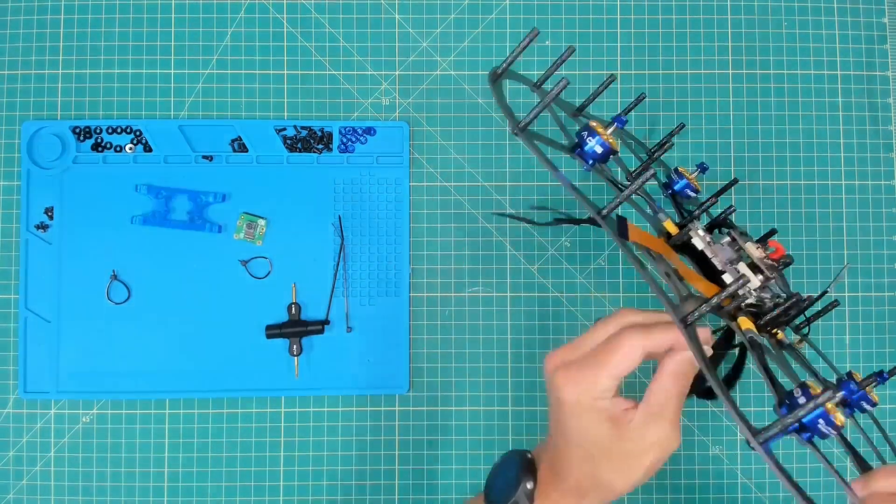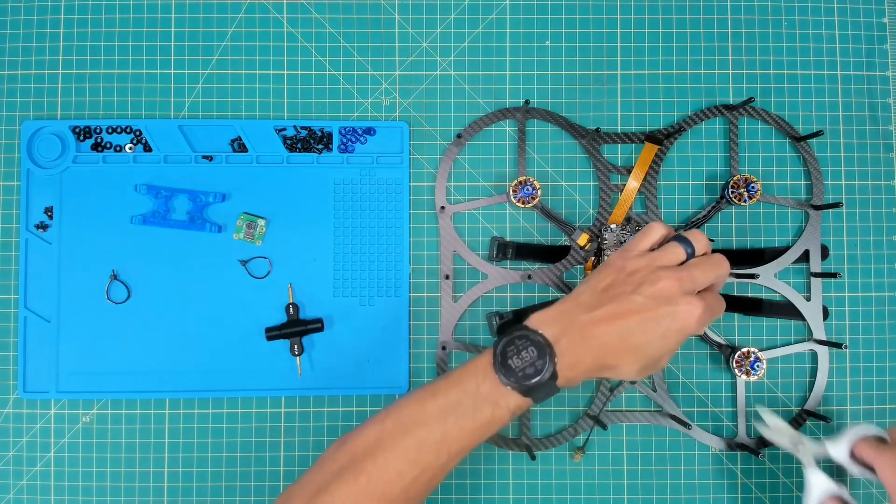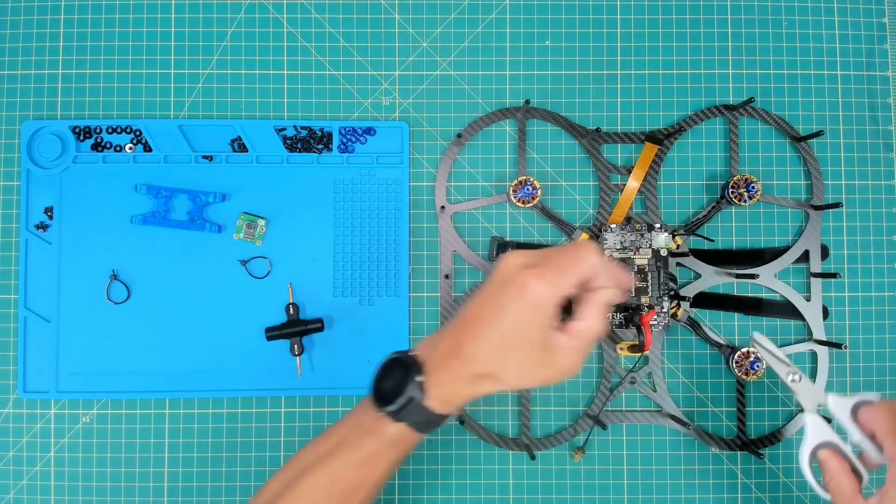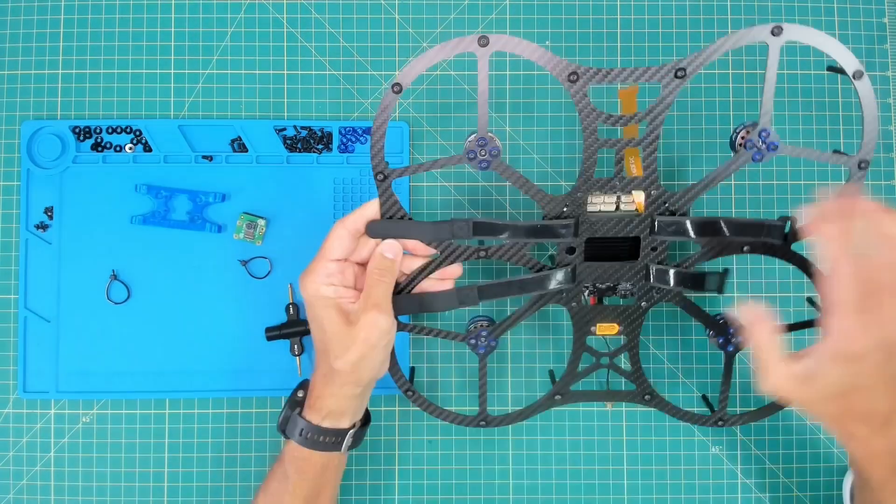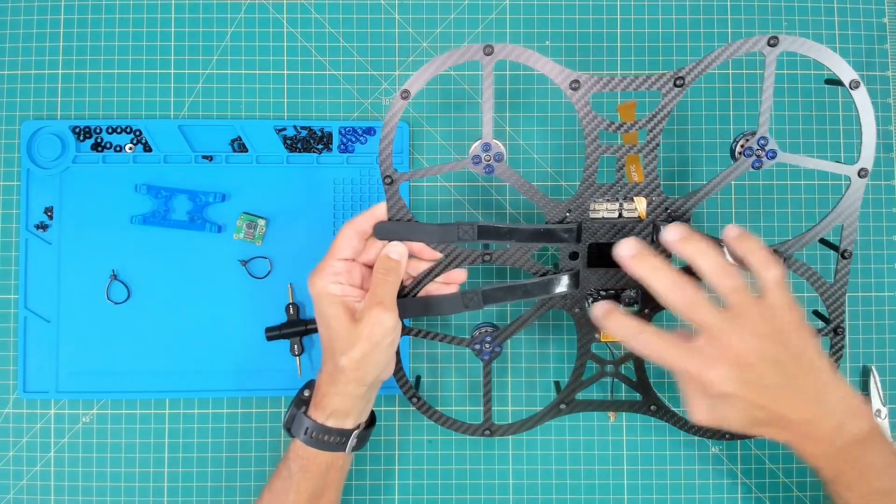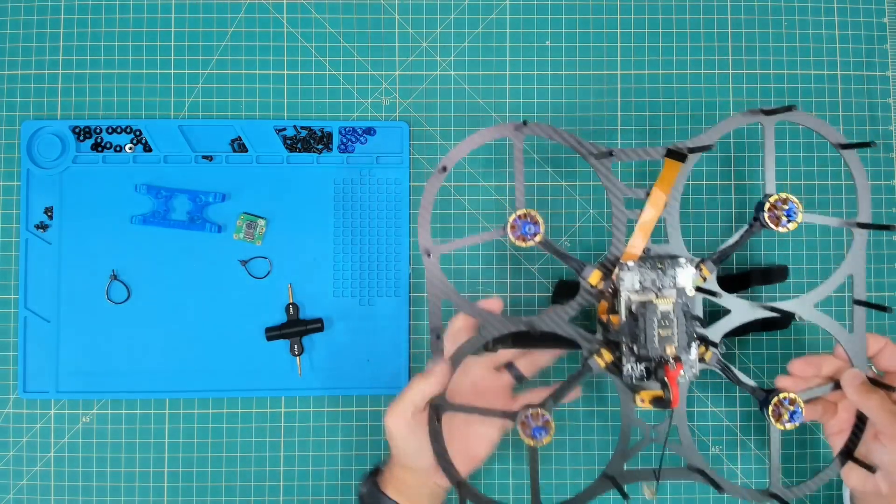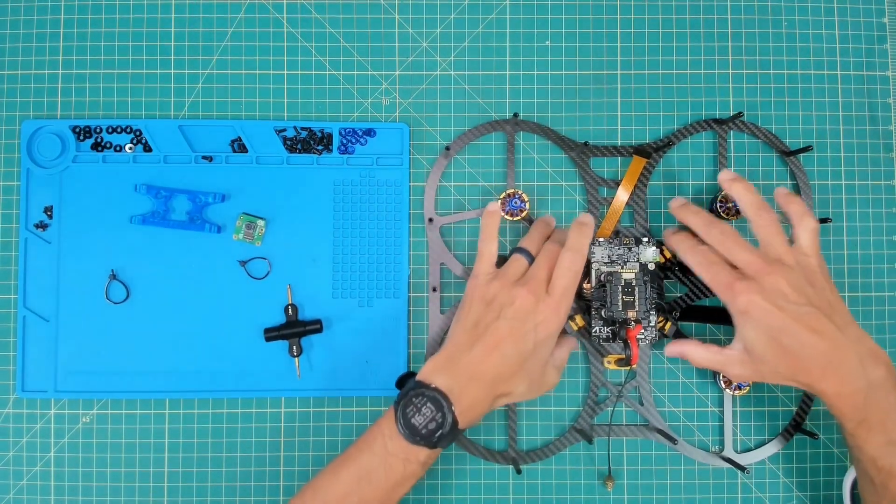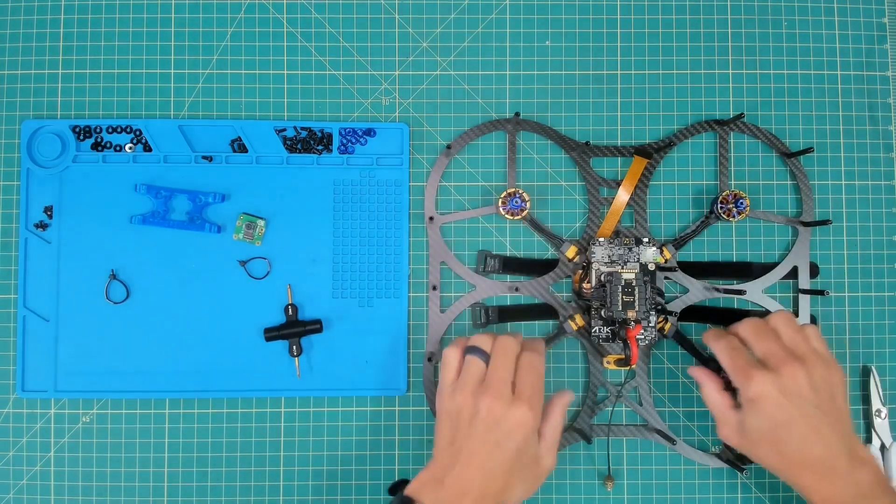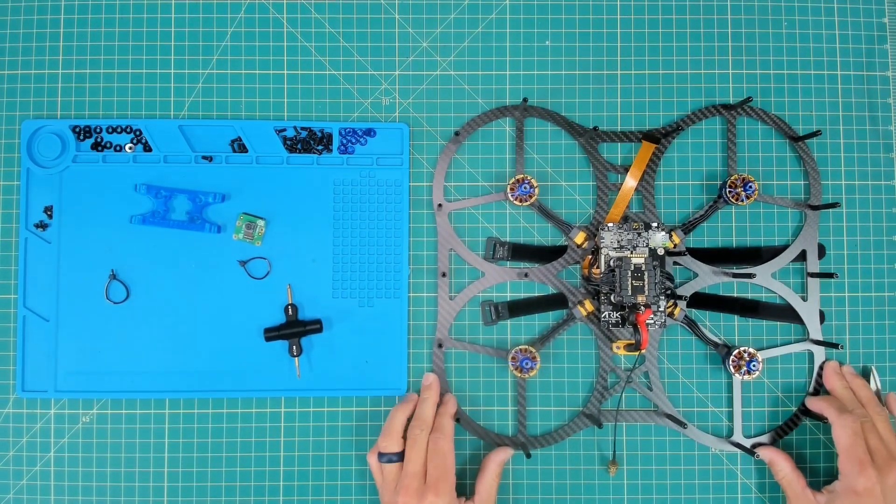Zip ties are in place. I'll trim the excess coming off of these. Go ahead and flip it over, take a quick look, make sure everything looks good. This just adds a nice professional touch to the build. Obviously, once again, keeps these leads nice and secure out of the way of our propellers. Now that we have that done, we're going to move on to the pi camera mount.